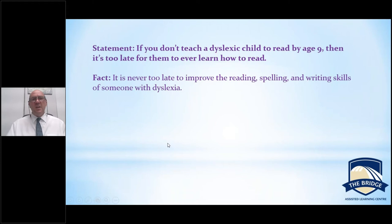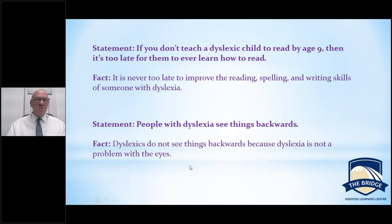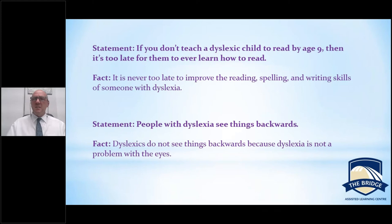People often say people with dyslexia see things backwards — it starts because of reversal of letters like B's and D's. But all research has shown that dyslexia is not about visual perception or problems with the eyes. It's not that at all. And the so-called 'mirror writing' — a child who can write their name backwards — that's not necessarily dyslexia either. There'll be other reasons. But if a child continues doing that and cannot learn other methods, then maybe it would be one feature of dyslexia.